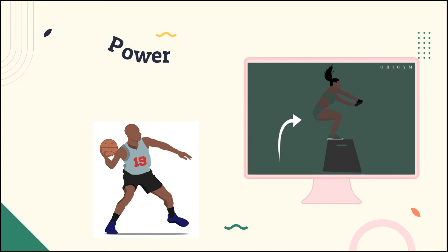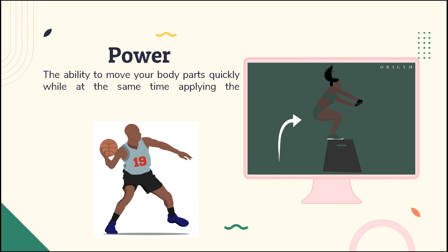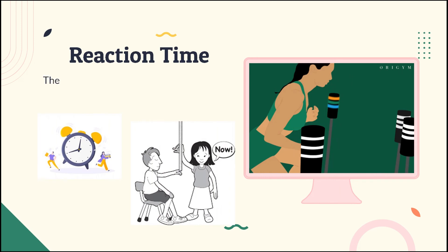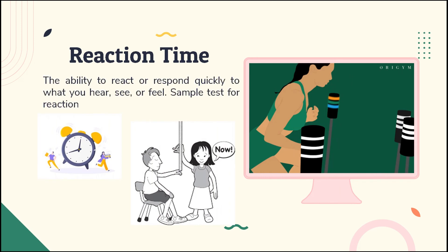Power is the ability to move your body parts quickly while at the same time applying the maximum force of your muscles. A sample test for power is the basketball pass. Reaction time is the ability to react or respond quickly to what you hear, see, or feel. A sample test for reaction time is the tick drop test.